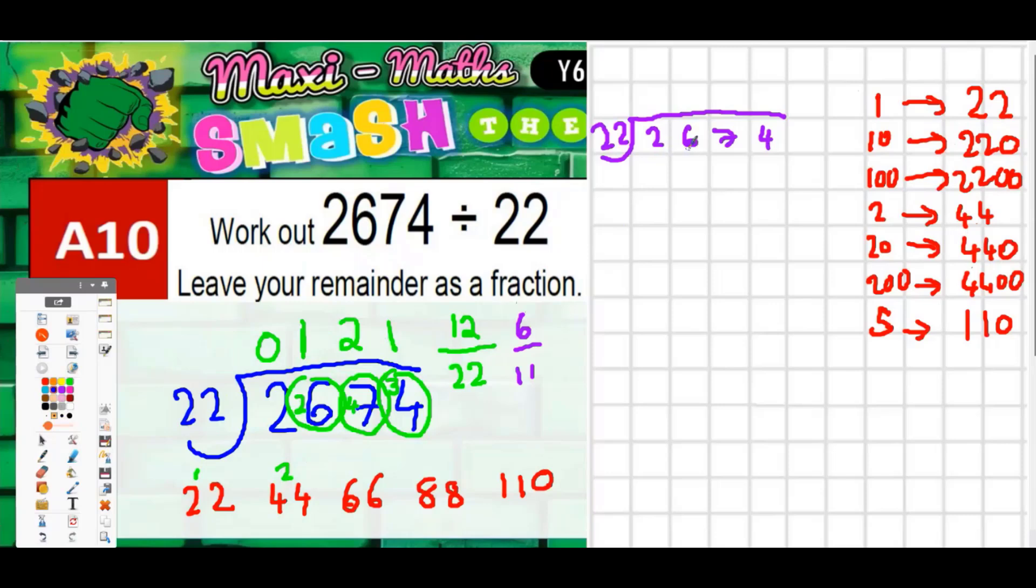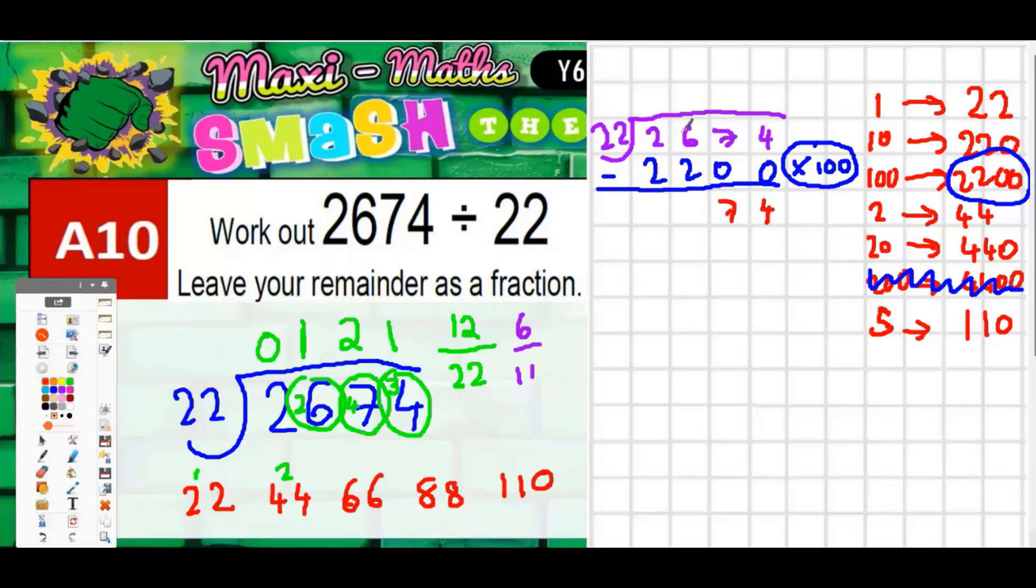So we're trying to get as low as we can from 2674. The biggest chunk we can subtract is this one here - that's 2200. 4400 is actually way too big so we might as well cross that chunk out already. So we're going to subtract 2200 and we're going to make a note of what chunk that is - that's a chunk of 100 at the side. And we're going to subtract that now. So 4 subtract nothing is 4, 7 subtract nothing is 7, 6 subtract 2 is 4, 2 subtract 2 is nothing, so we're down to 474.